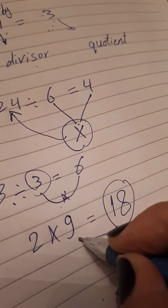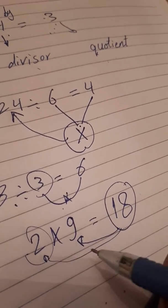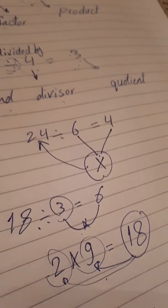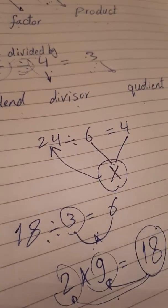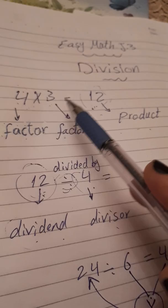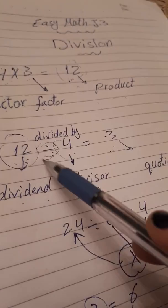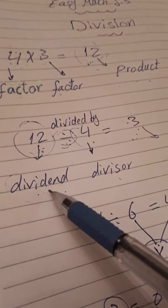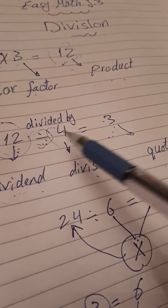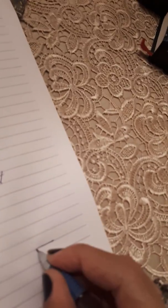If we say 18 divided by 9 equal 2, or 18 divided by 2 equal 9 — it's an inverse relationship. In division the largest number is the dividend; the other two are the divisor and the quotient. This is another example of the division notation symbol.